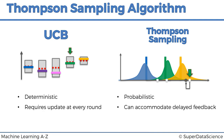Whereas in Thompson sampling, it can accommodate delayed feedback. This basically means that if you pull the lever and you will only know the result 500 rounds down the track — not right away — the Thompson sampling algorithm will still work. Why? Because if you run the algorithm without even updating your perception of the world, you're still going to get a new set of hypothetical bandits. You're going to generate a new expected return for every bandit because you are generating them in a probabilistic manner. This gives Thompson sampling the advantage that you don't have to update the algorithm with the result every time.